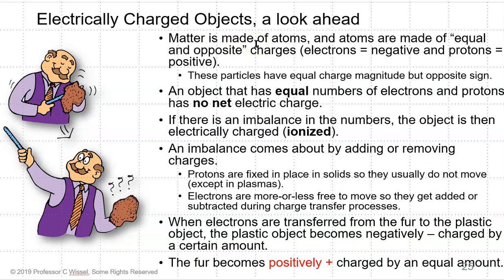Matter is made up of atoms. Atoms are made of equal and opposite charges. The electrons are negative. Protons are positive. These particles have an equal charge magnitude but opposite sign. An object that has equal numbers of electrons and protons has no net electric charge. If there's an imbalance in the numbers, then the object is electrically charged. We call that ionized. An imbalance comes about by adding or removing charges. The protons in solids are fixed in place, so they do not move. This is not true of plasmas or liquids or any type of things where there's a solution like an acid or a base. The electrons are more or less free to move, so they get added or subtracted during the charge transfer process. Usually it's the negative charges that move. The positive ones are usually fixed in place, but that's not always true. It's not true of plasma. It's not true of liquids. It's not true of anything that's dissolved in solution such as acid or base or salt water.